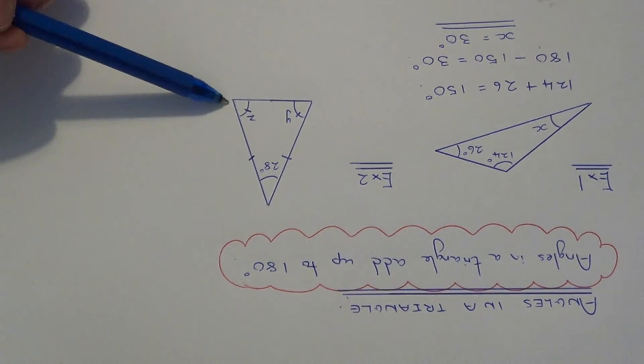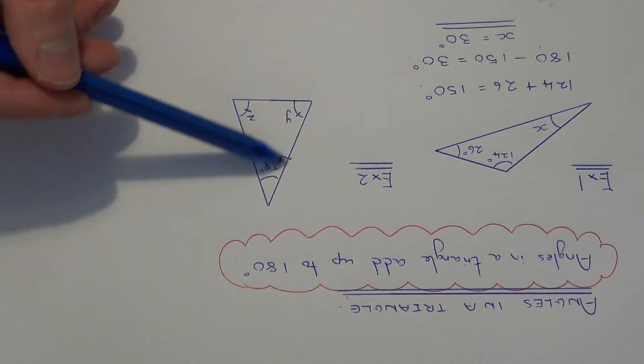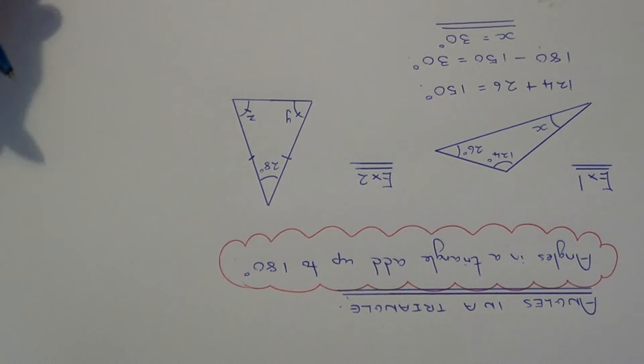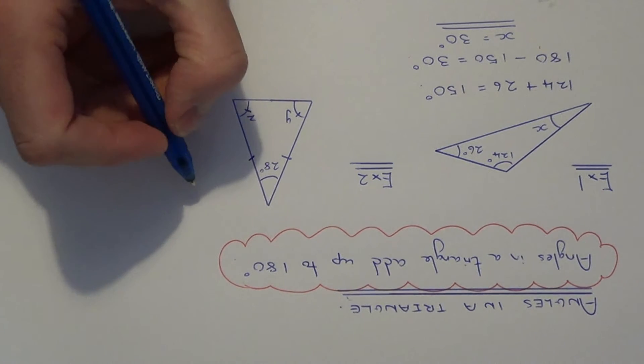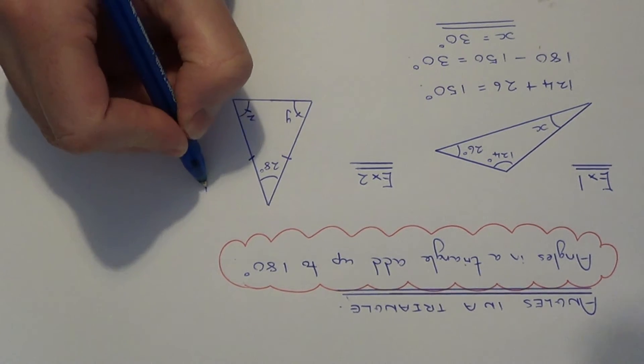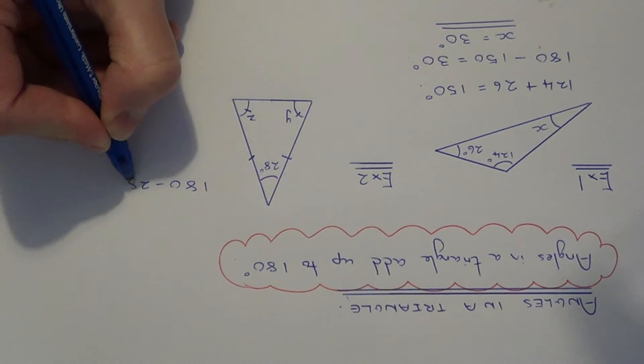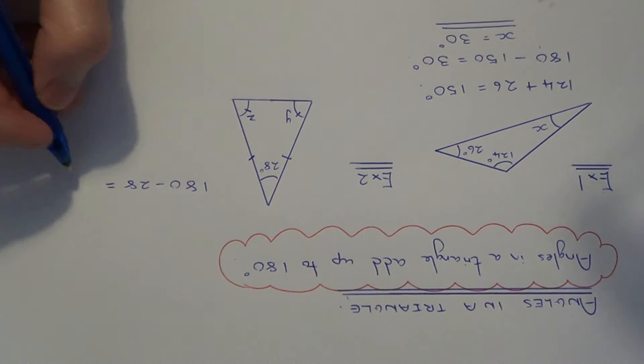Again, we know that angles in any triangle add up to 180 degrees. We've only got one angle this time, so if we take this from 180. So 180 minus 28 gives us 152 degrees.